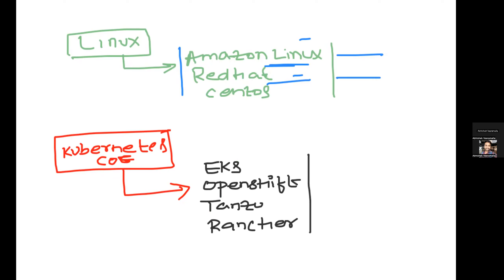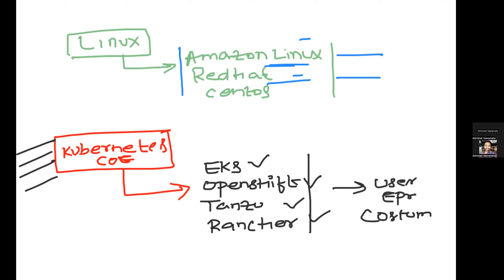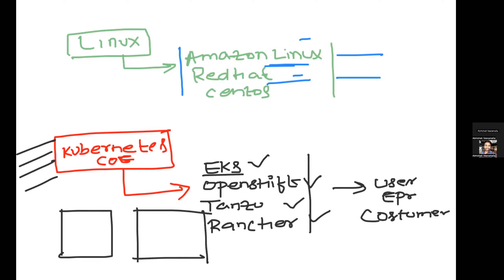If you understand the concept, architecture, and how Kubernetes works, you almost know all of these tools — because they're not building anything fundamentally new, but rather providing a better user or customer experience on top of Kubernetes. For example, if you have any issue with EKS, you can raise a support ticket with Amazon and it will get resolved because you're paying for EKS. Whereas if you install Kubernetes yourself on EC2 instances, Amazon will only support you on EC2 — not on Kubernetes itself.